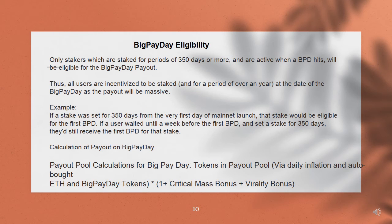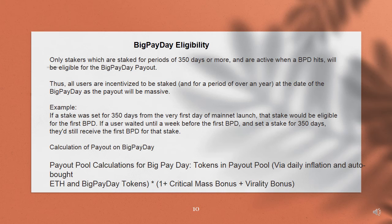Only stakers who are staked for periods of 350 days or more and are active when a Big Pay Day hits will be eligible for the Big Pay Day payout. All users are incentivized to be staked for a period of over a year at the date of their Big Pay Day, as the payout will be massive. If a stake was set for 350 days from the very first day of mainnet launch, that stake would be eligible for the first BPD. Even if a user waited until a week before the first BPD and set a stake for 350 days, they'd still receive the first BPD for that stake.